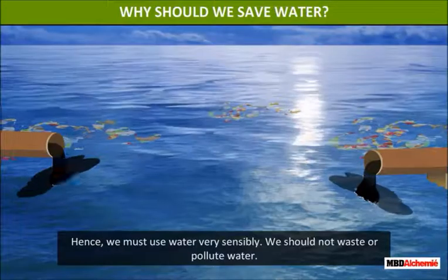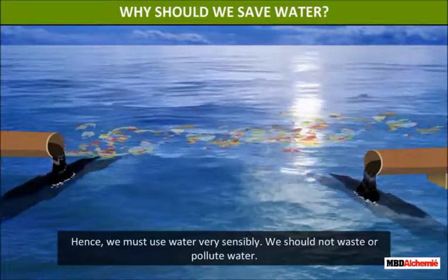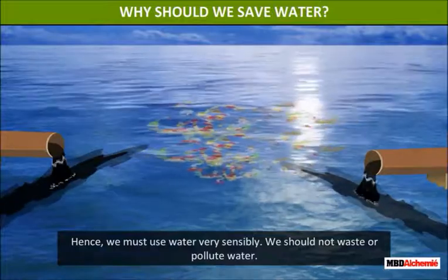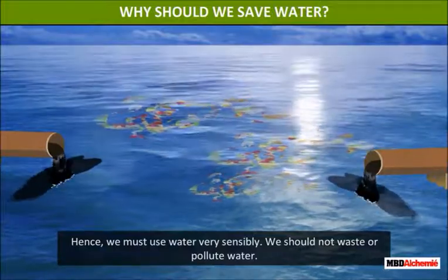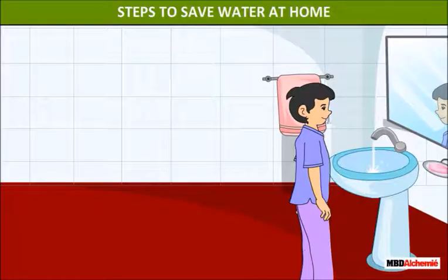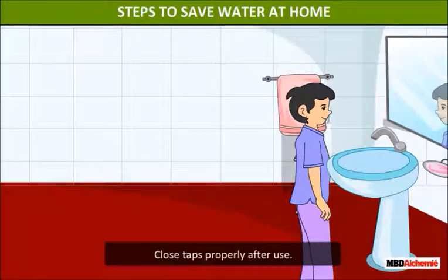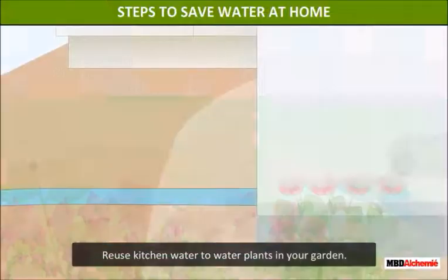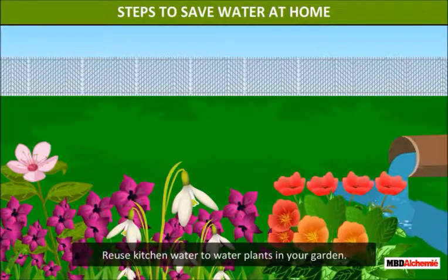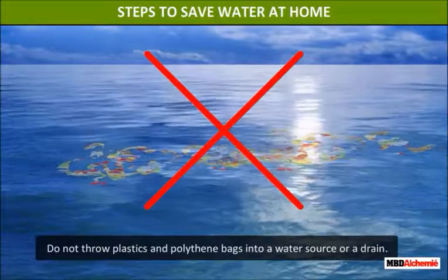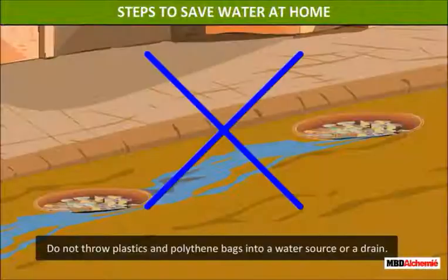Hence we must use water very sensibly. We should not waste or pollute water. Water conservation steps to save water at home: close taps properly after use, reuse kitchen water to water plants in your garden, and do not throw plastics and polythene bags into a water source or a drain.